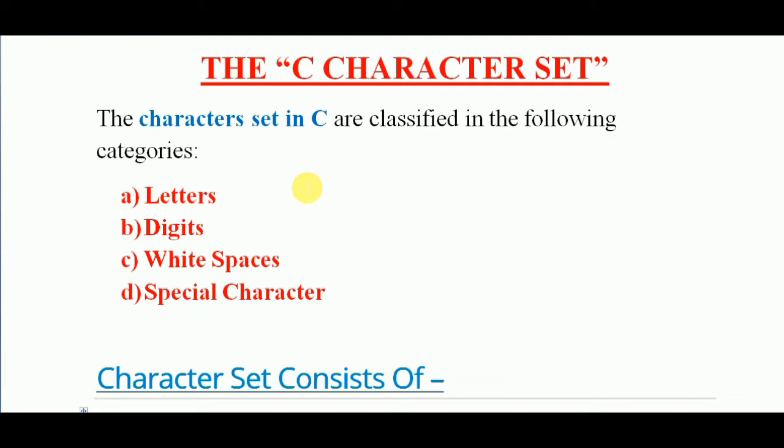So what is the C character set? The C character set in C programming language is the set of all valid characters like alphabets, digits, and special symbols that can be used to form words, numbers, and expressions in source programs.